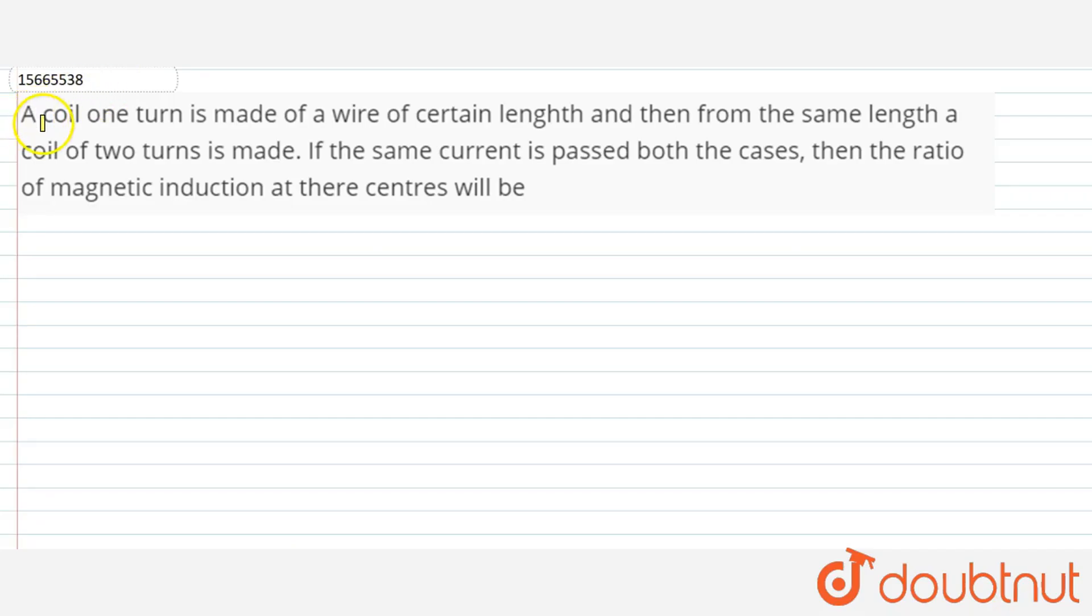This question says that a coil of one turn is made of a wire of a certain length and then from the same wire of the same length, a coil of two turns is made. If the same current is passed through both the cases, then the ratio of magnetic induction at the centers will be what?